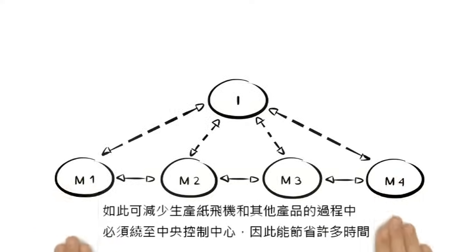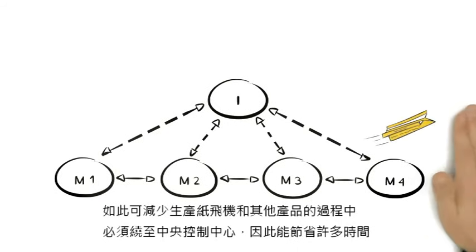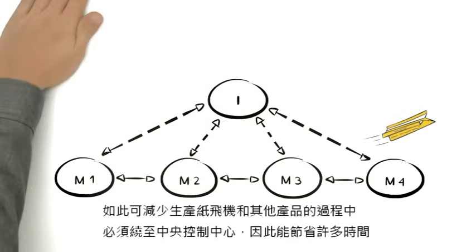Avoiding the detour over a central hub during production of a paper plane and any other product saves a lot of time.